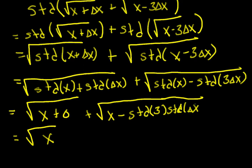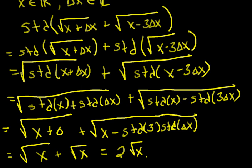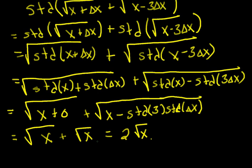And the standard part of 3 is 3, and the standard part of delta x is 0, so that's 3 times 0. This ends up being the square root of x plus the square root of x, or 2 root x. So even though we added a delta x and subtracted a different delta x inside the two radicals, looking at the standard part of their sum, we end up with root x plus root x.